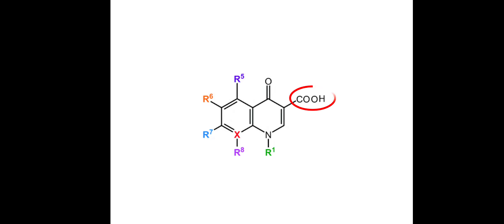The structure you can see on the screen is the basic structure of quinolone. Here you can see a carboxyl group at position number 3 and a ketone group at position number 4. These are very much essential for the antibacterial activity of quinolones.